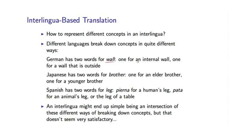In English, we have a single word for 'wall', but in German there are actually two words for wall — one for a wall that is internal to a house, and one for an external wall. Japanese has two words for 'brother': one for an elder brother and one for a younger brother. Spanish has two words for the English word 'leg' — one for a leg of a human, and another for the leg of an animal or a piece of furniture, like a table. As you go through language by language, you find that each language has its own way of breaking up the world into different concepts.